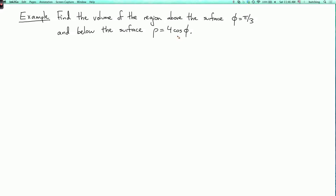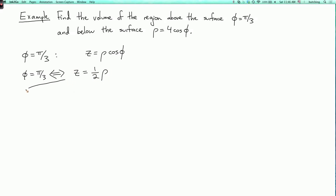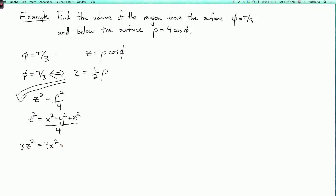Let's first try to figure out what these surfaces are by converting to Cartesian. For the surface φ equals π/3, remember that z equals ρ cosine φ. So φ equals π/3 if and only if cosine φ is one half, meaning z equals ρ/2. Squaring both sides gives z² equals ρ²/4, which expands to z² equals x² plus y² plus z²/4, or combining: 3z² equals 4x² plus 4y².